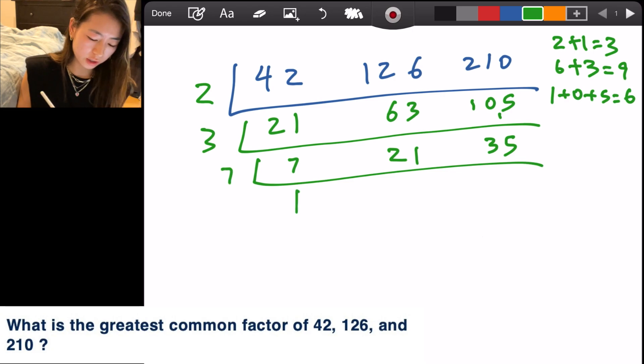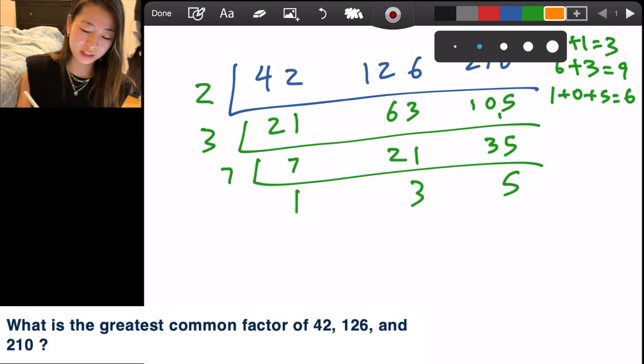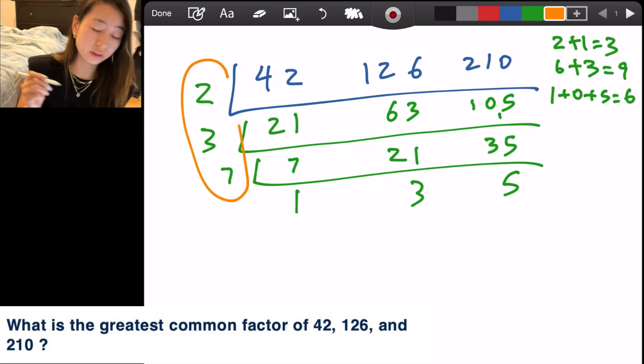7 divided by 7 is 1, 21 divided by 7 is 3, 35 divided by 7 is 5. And finally, we can't divide anymore because we already have a 1 here. And guess what? The greatest common factor is everything on the left side multiplied together.